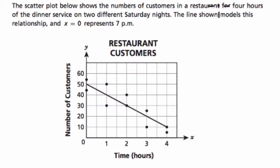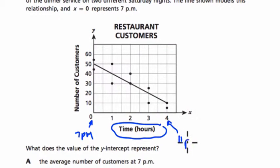The scatterplot below shows the number of customers in a restaurant for four hours at the dinner service on two different Saturday nights. We've got hours here on the x-axis. The line shown models this relationship, and x equals 0 represents 7 p.m. So we're starting at 7 p.m. over four hours - 8, 9, 10, 11 p.m.